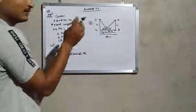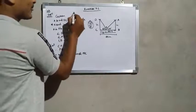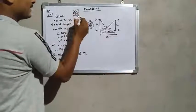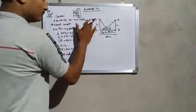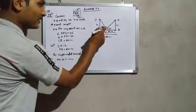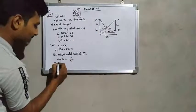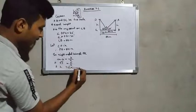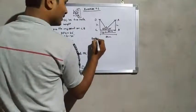We have height and base — height means the opposite side of the angle, which is called the perpendicular. Using the trigonometric ratio, tan 60 degrees equals h by x, that is perpendicular over base. Putting the value of tan 60 degrees, which is √3, we get √3 = h/x, so h = √3·x. This is Equation 1.